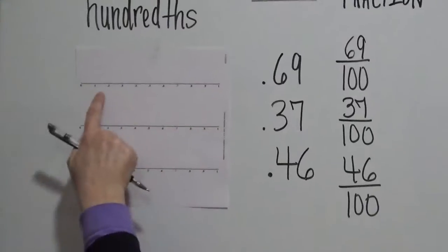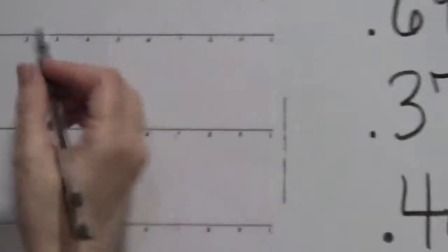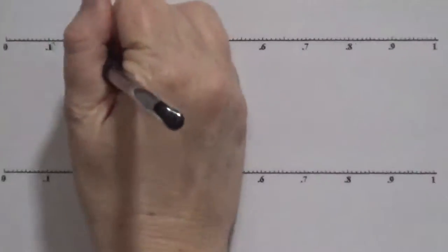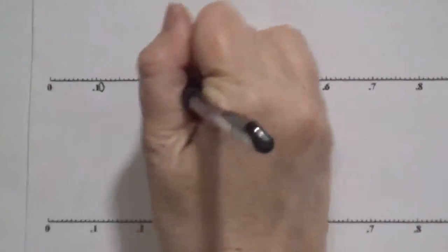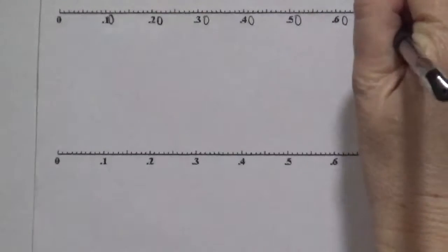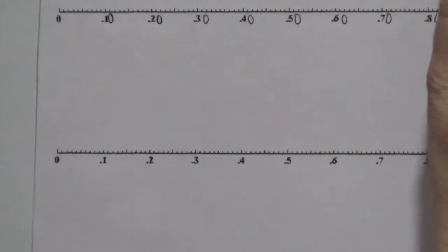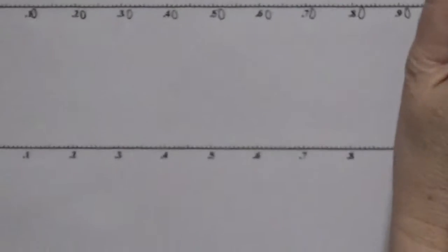And as you can see, this is in tens, but we're going to, so this would be 10 cents, 20 cents, 30 cents, 40 cents, 50 cents, 60 cents, 70 cents, 80 cents, 90 cents, and then one whole dollar.